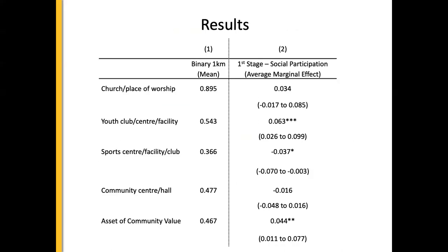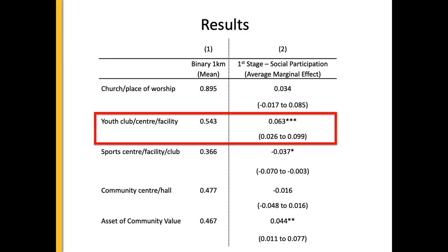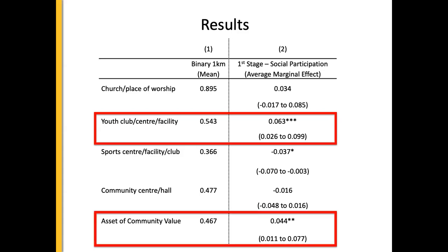Looking at the results: column one shows summary statistics and column two shows first-stage results. For youth clubs within Greater Manchester, 54.3% of individuals had a youth centre within one kilometre of their LSOA centroid, and 46.7% had an asset of community value within one kilometre. In terms of the average marginal effects on social participation, individuals who had a youth club within one kilometre were 6.3 percentage points more likely to engage in social participation than those who did not.